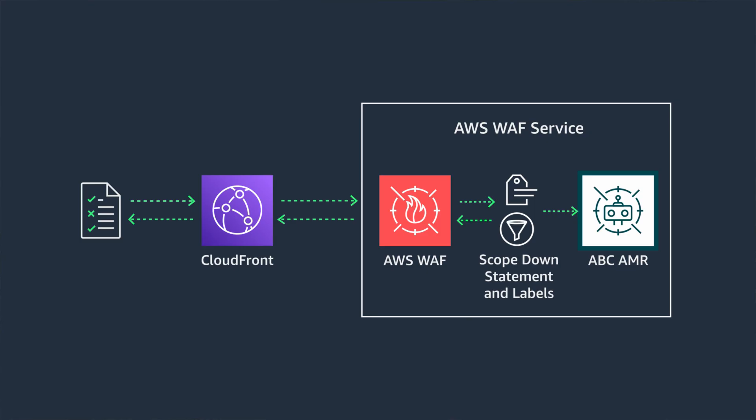AWS Bot Control doesn't block bots that are known by AWS to be common and verifiable bots, so it's designed to minimize these errors by default. False positives come with almost any WAF solution, so you would need to consider a fair trade-off between blocking and allowing illegitimate traffic.